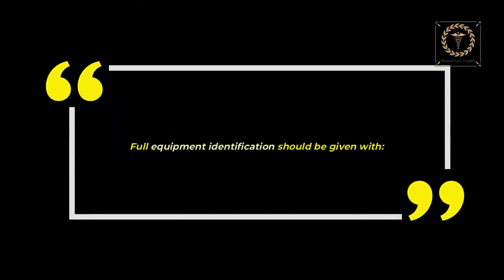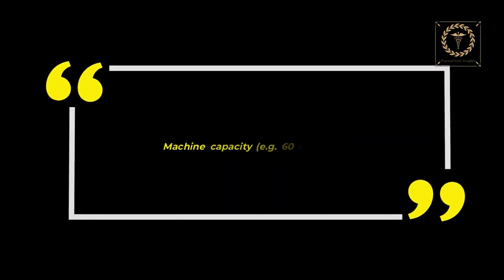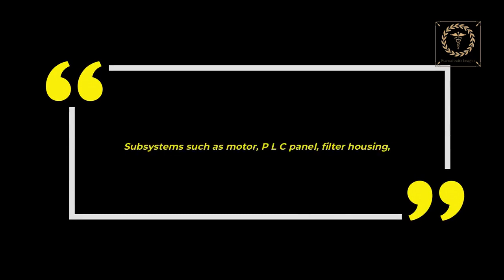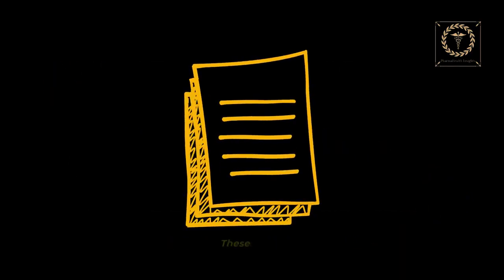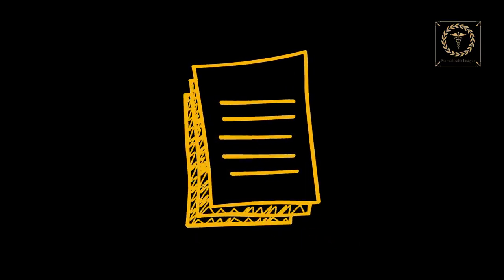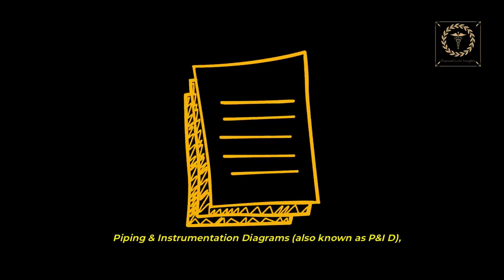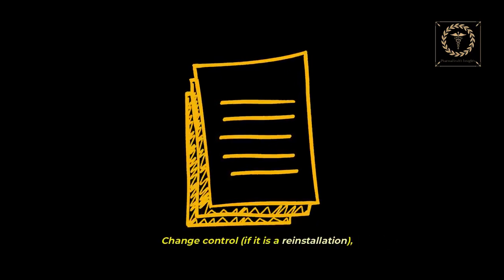Include equipment description with full equipment identification: purchase order copy, tag number and nameplate photo, machine capacity (e.g., 60 kg blender), subsystems such as motor, PLC panel, filter housing, and serial numbers. Always include reference documents: URS and DQ documents, vendor O&M manuals, engineering layouts, piping and instrumentation diagrams (P&ID), calibration and test reports, and change control if it is a reinstallation.